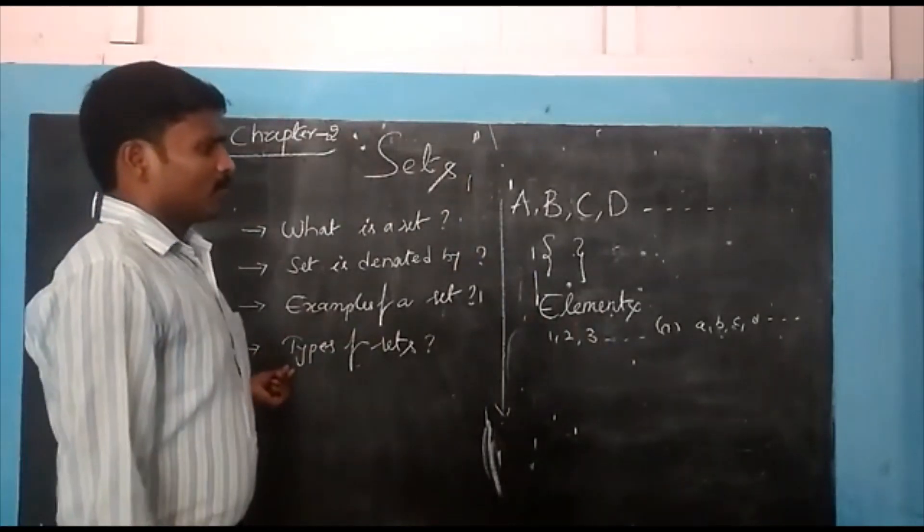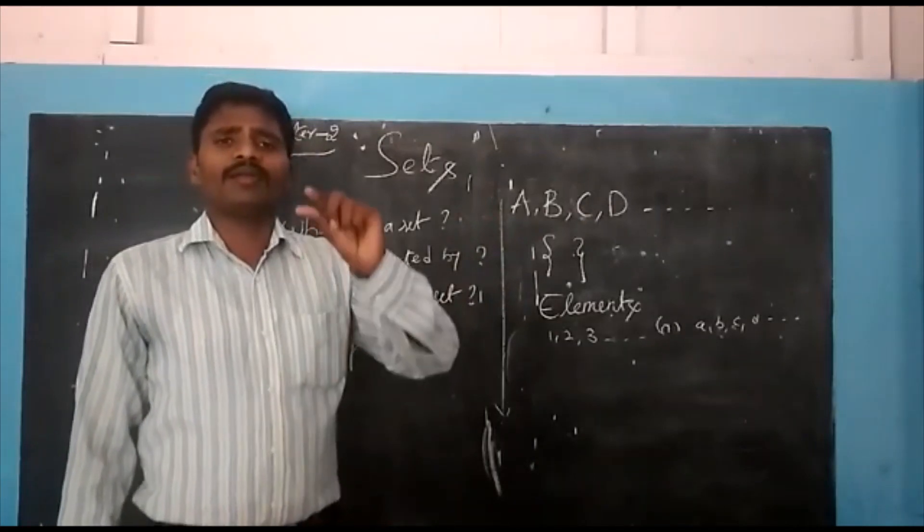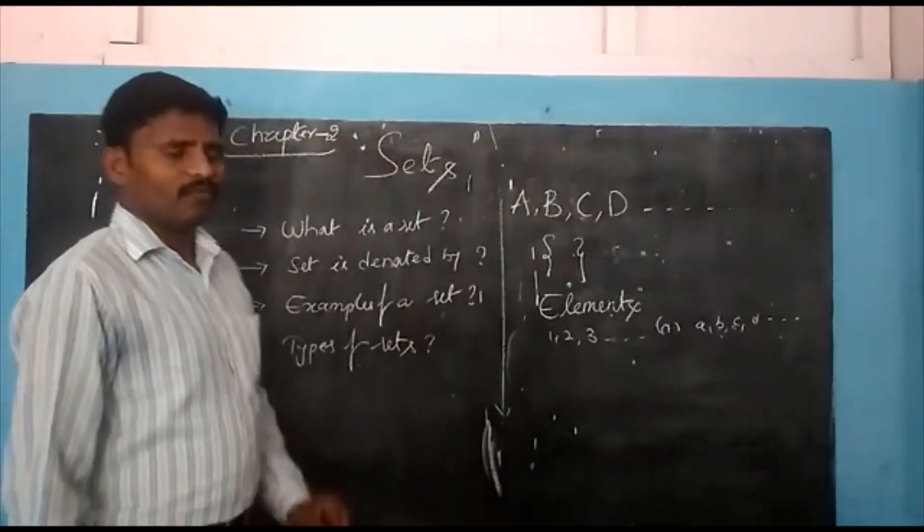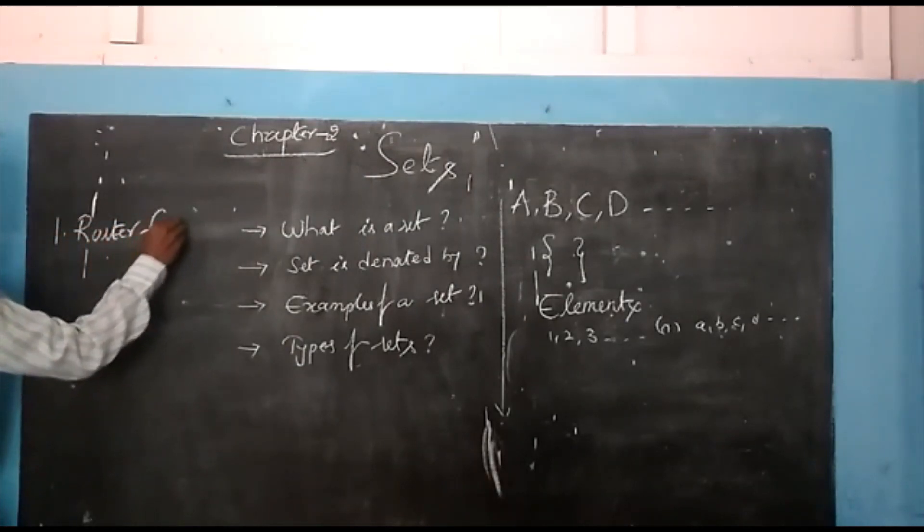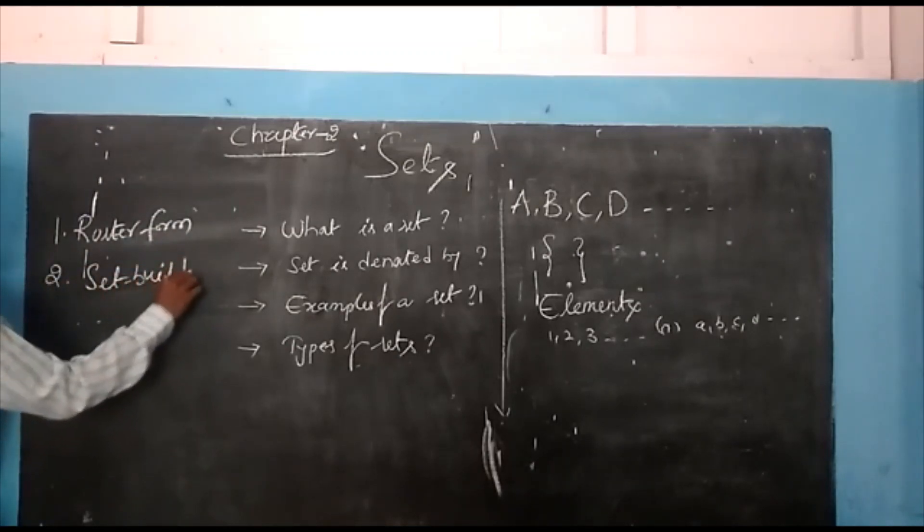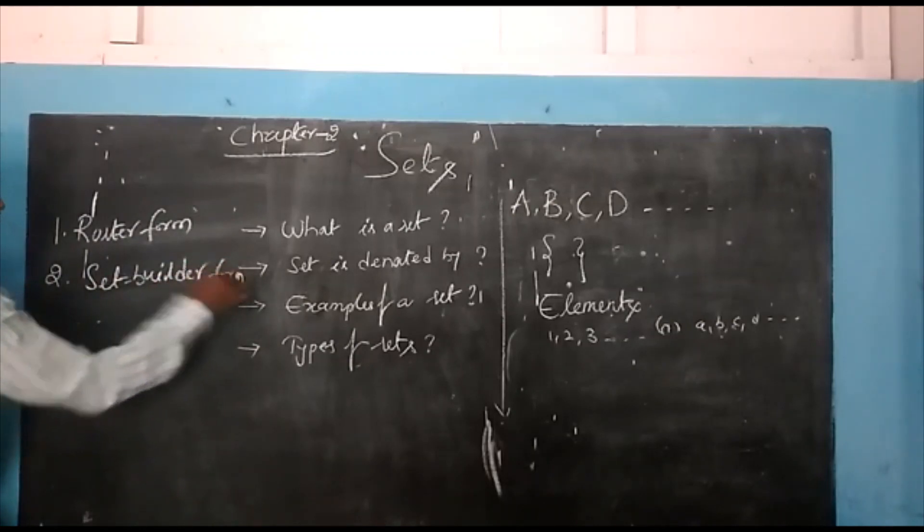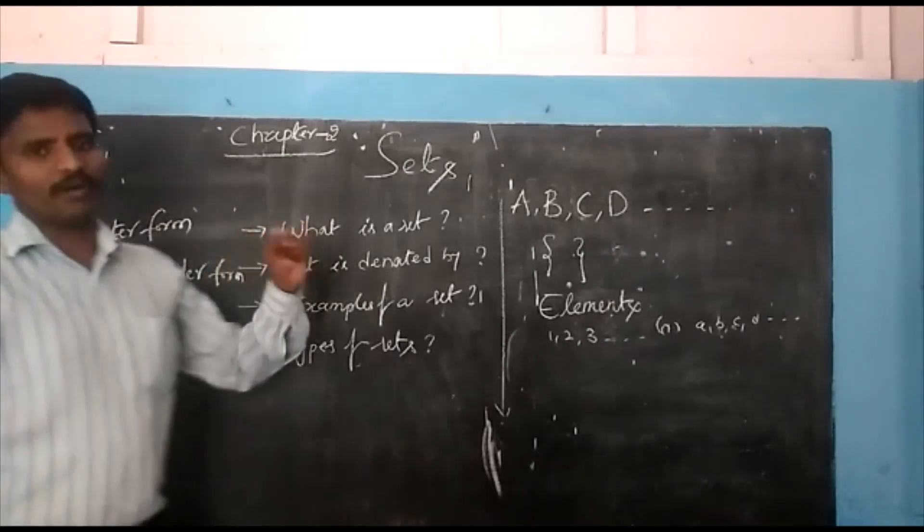Now, these sets are represented by two types. One is roster form, and the second one is set builder form.